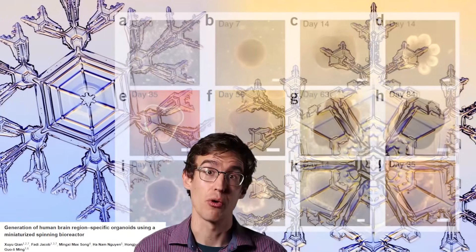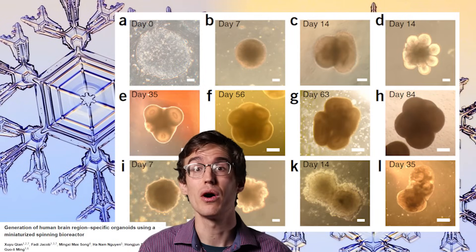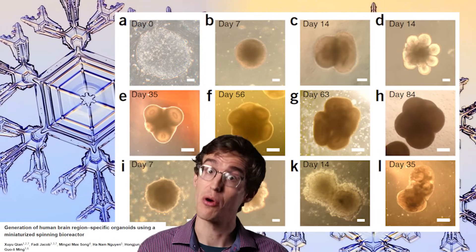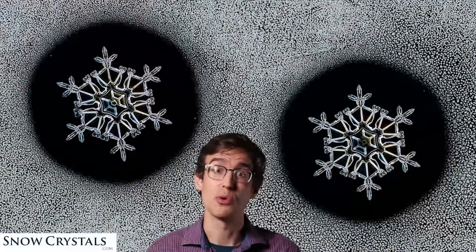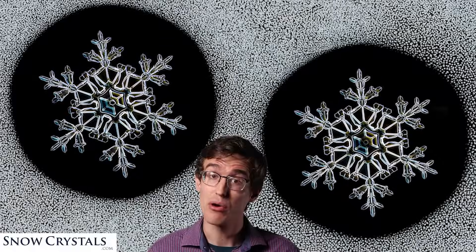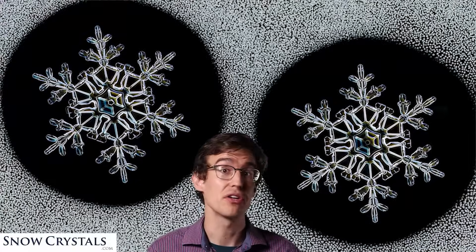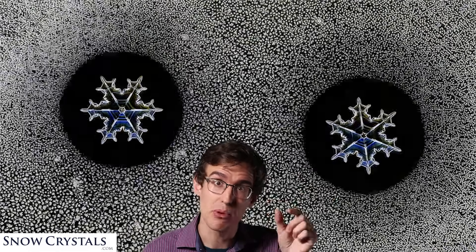And even though cerebral organoids all look kind of like brains, each one is a special little snowflake that grows a little differently. But under carefully controlled lab conditions, you can make two snowflakes that are more or less identical. And you can even customize them by adjusting the temperature and humidity which will change the shapes of the crystals.